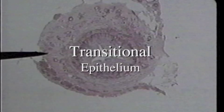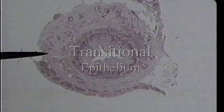This is a cross-section of the ureter taken at low power. We are interested in the ureter because it is lined by transitional epithelium. In this slide you can see a star-shaped lumen. The tissue surrounding the lumen is transitional epithelium.